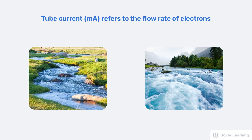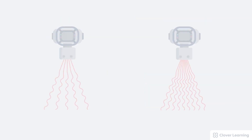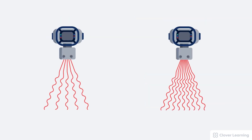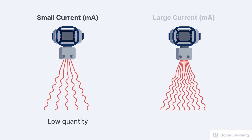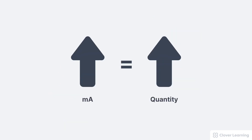Let's start by talking about the milliamperage. MA is simply the tube current — the rate of electron flow through the x-ray tube. In a river, a small current is a small amount of water flow, and a large current is a large amount of water flow. In an x-ray tube, something very similar is happening. A small current, or small MA, results in a low quantity — fewer x-ray photons. But a large MA results in a high number of x-ray photons, which we describe as high quantity or high intensity.